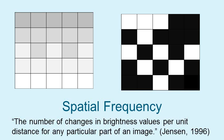Images can have very little change in their brightness values per unit distance, in which case they are considered to have a high spatial frequency. Man-made objects such as roads and buildings can result in high spatial frequency, or natural objects such as faults, joints, and abrupt boundaries between land cover types can result in high spatial frequency.